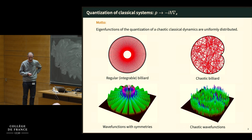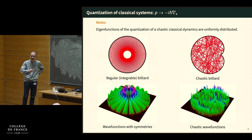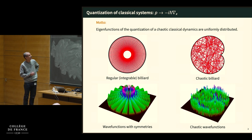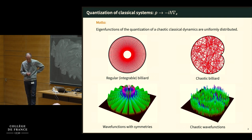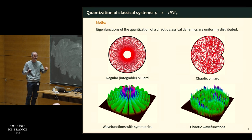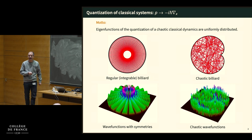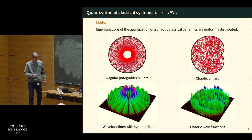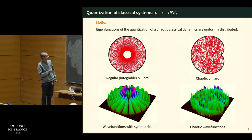This is a basic idea about quantization of classical dynamical systems, which amounts to changing the momentum observable classically called P. In classical mechanics, you change it to the usual momentum operator, minus i times the Laplacian in the quantum setup. There are basically two types of systems: regular integrable systems on one side, and chaotic systems on the other. Of course there are many things in between, but let's focus on these two situations.